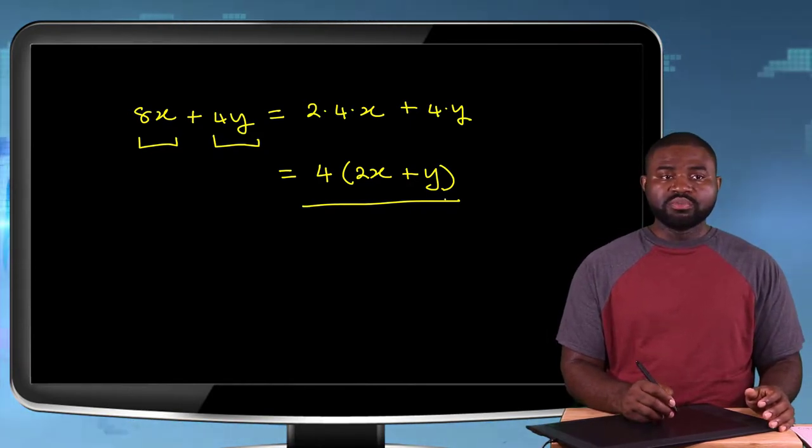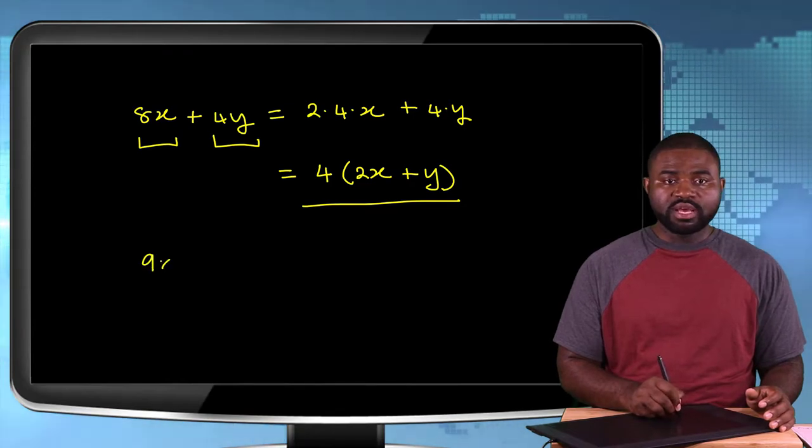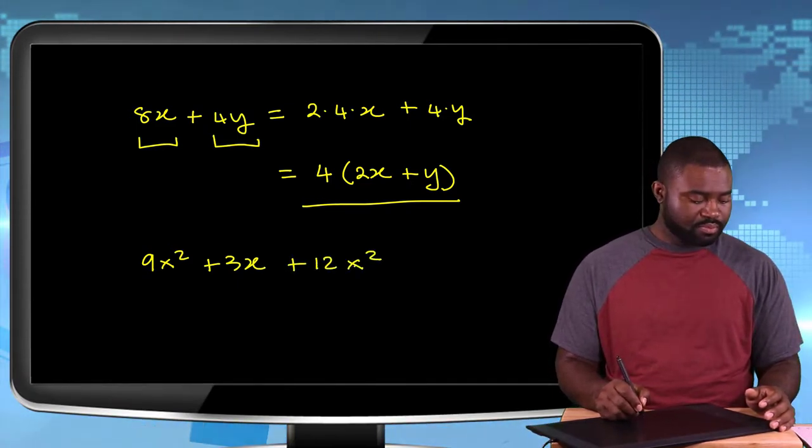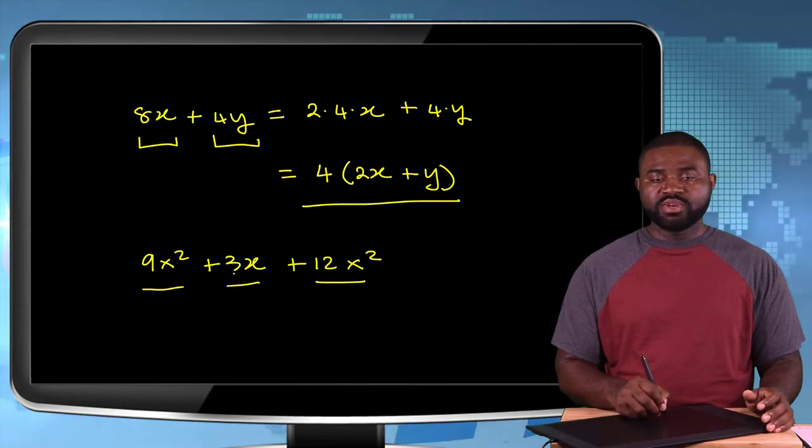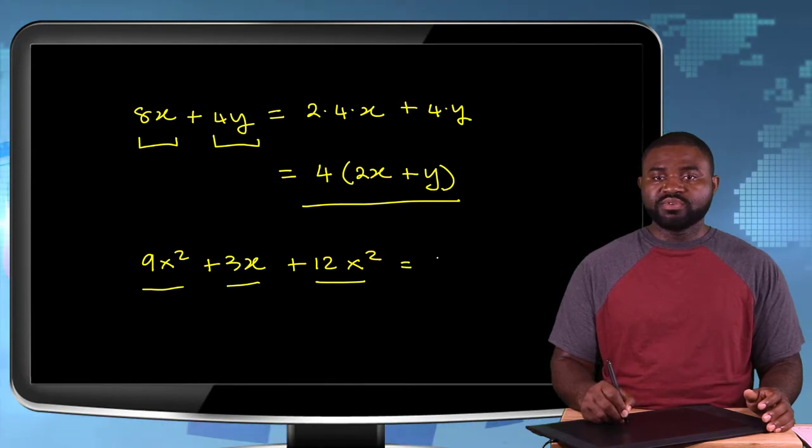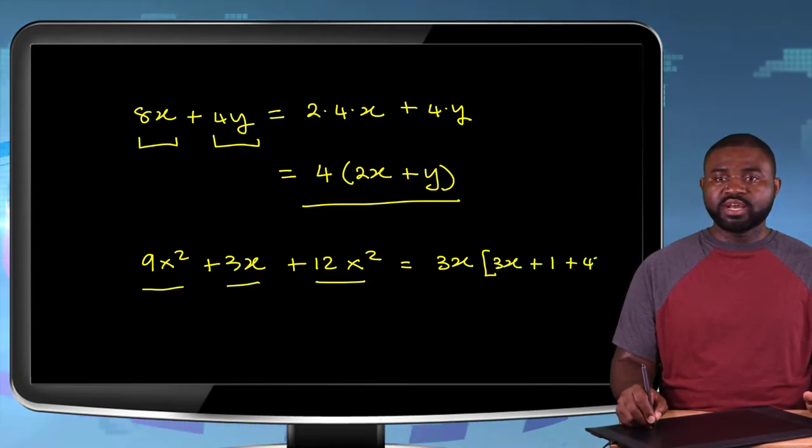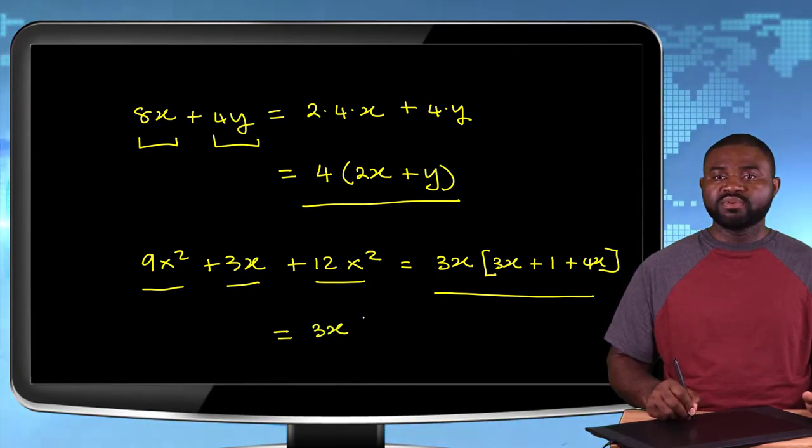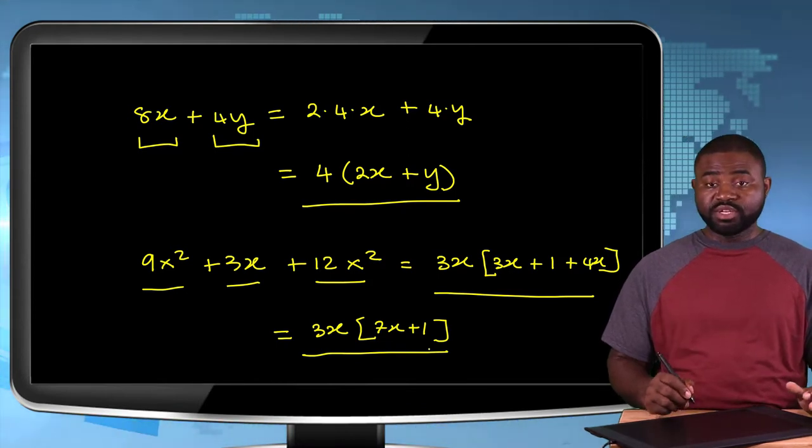Now, another typical example will be if we have, let's say, 9x² + 3x + 12x³. So when we look at these three terms in this particular expression, what is common? You see that 3 is a factor of 9 and a factor of 12. So 3 is common. x is a factor of x² and a factor of x. So this can be rewritten as 3x(3x + 1 + 4x²), and this right here can still be further simplified to 3x(7x + 1). This is in its simplest form and we have introduced brackets.